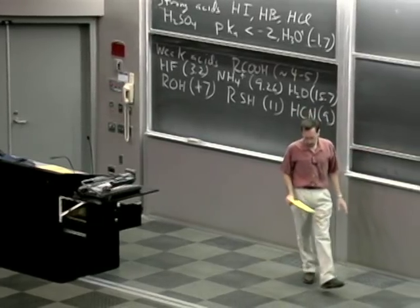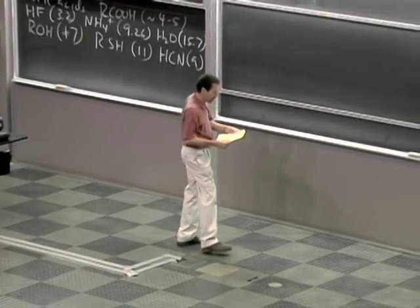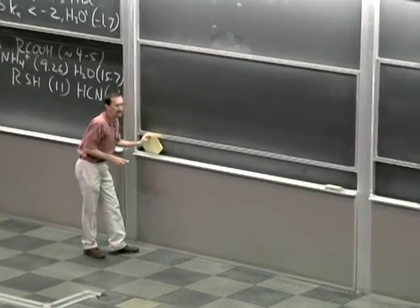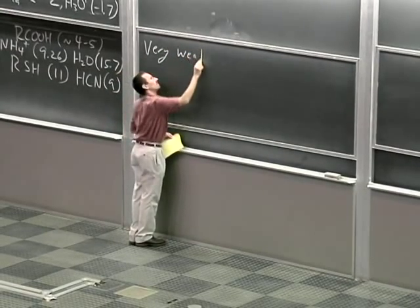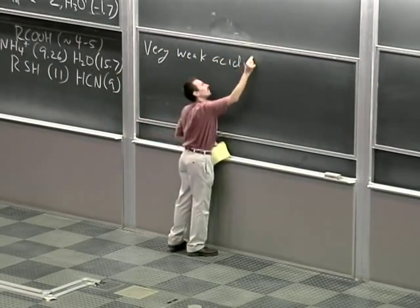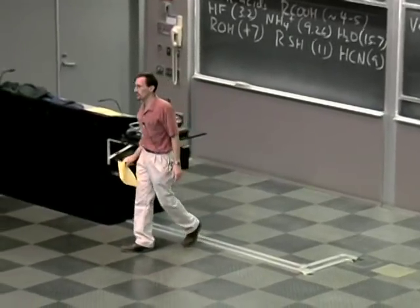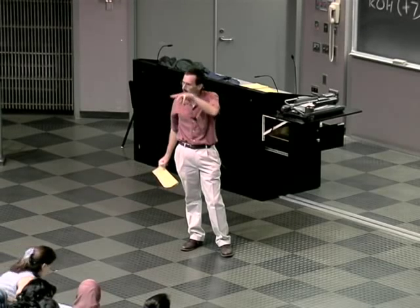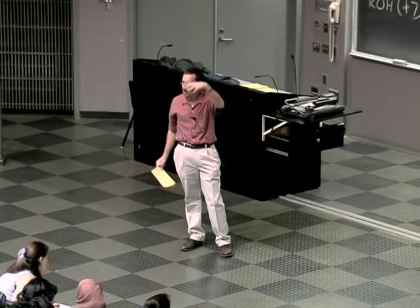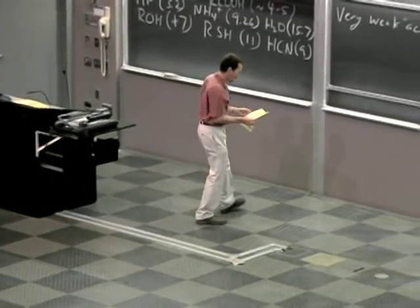The last category — and this really gets into compounds that are of a lot of importance in organic chemistry — are things that you wouldn't often think of as acids. I'm going to call them very weak acids, putting 'acids' in quotes. At the end of the last lecture, we got into a discussion of methane and how no molecules of methane would be ionized in water. And yet the pKas of organic compounds like methane and others are important when one looks at them in relationship to reactions with other compounds.